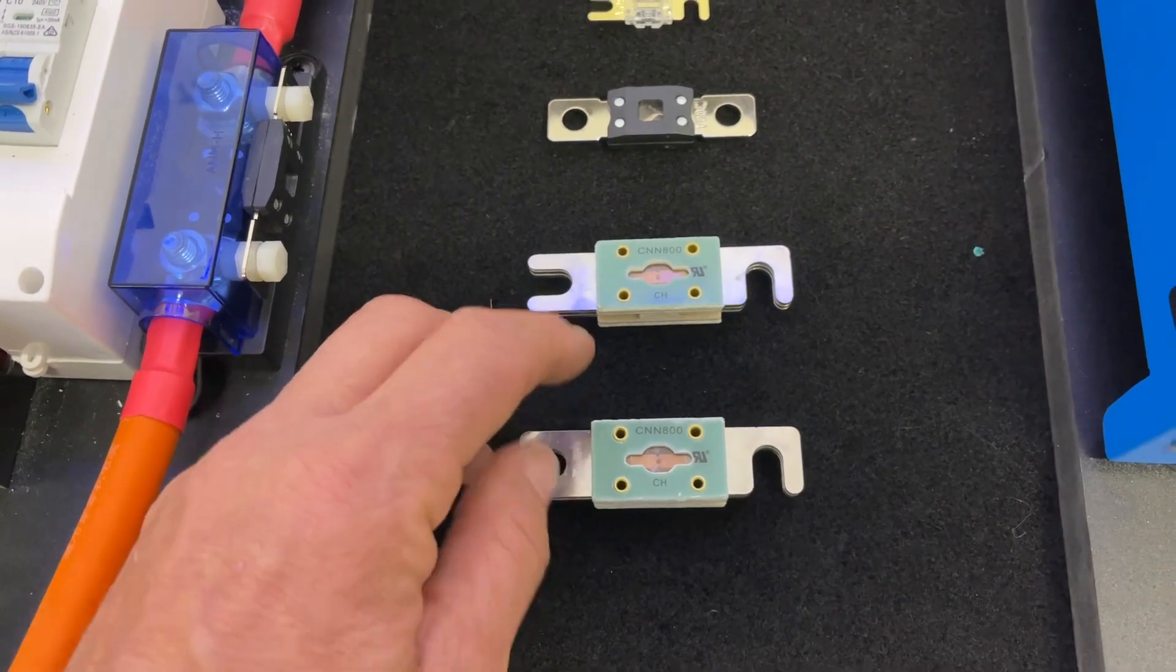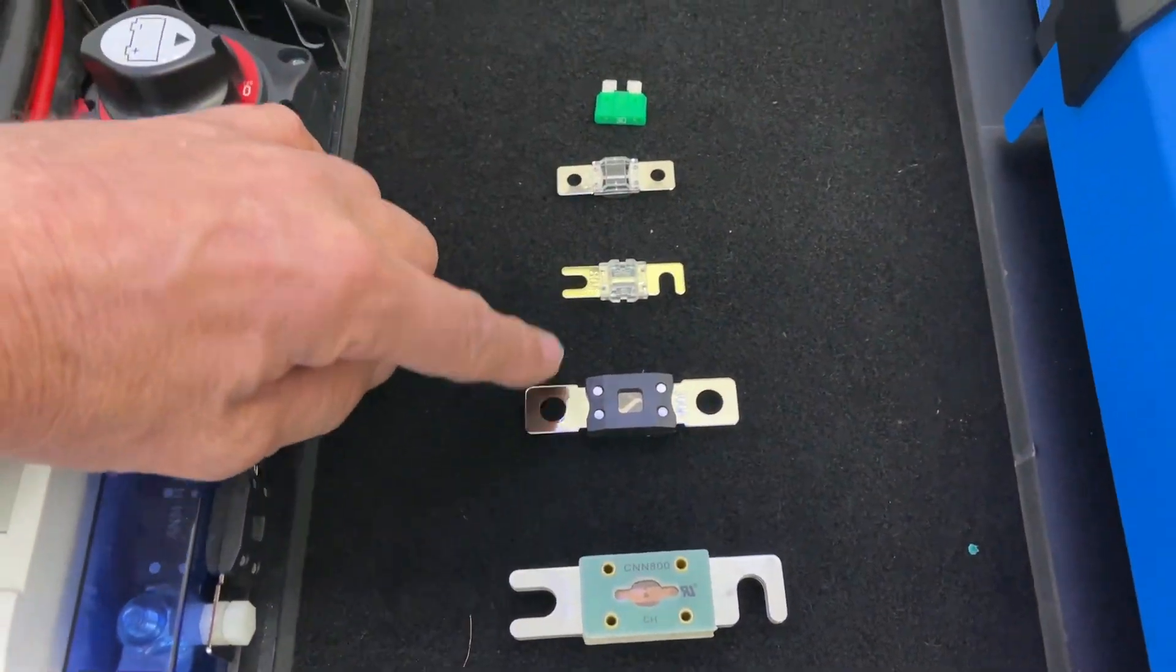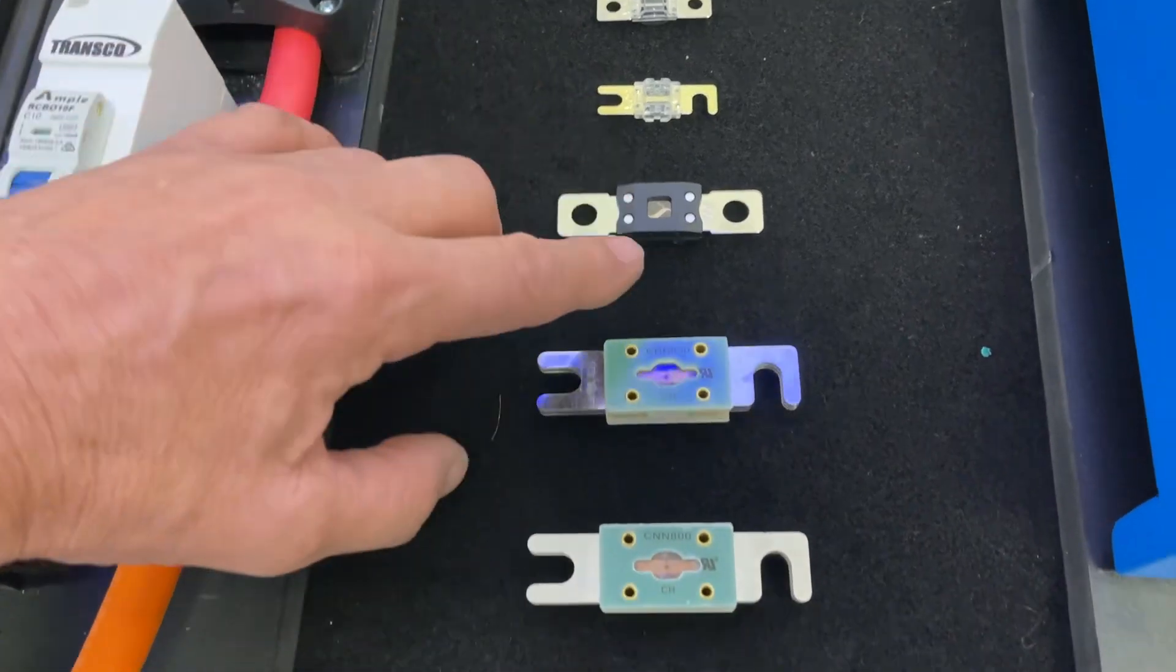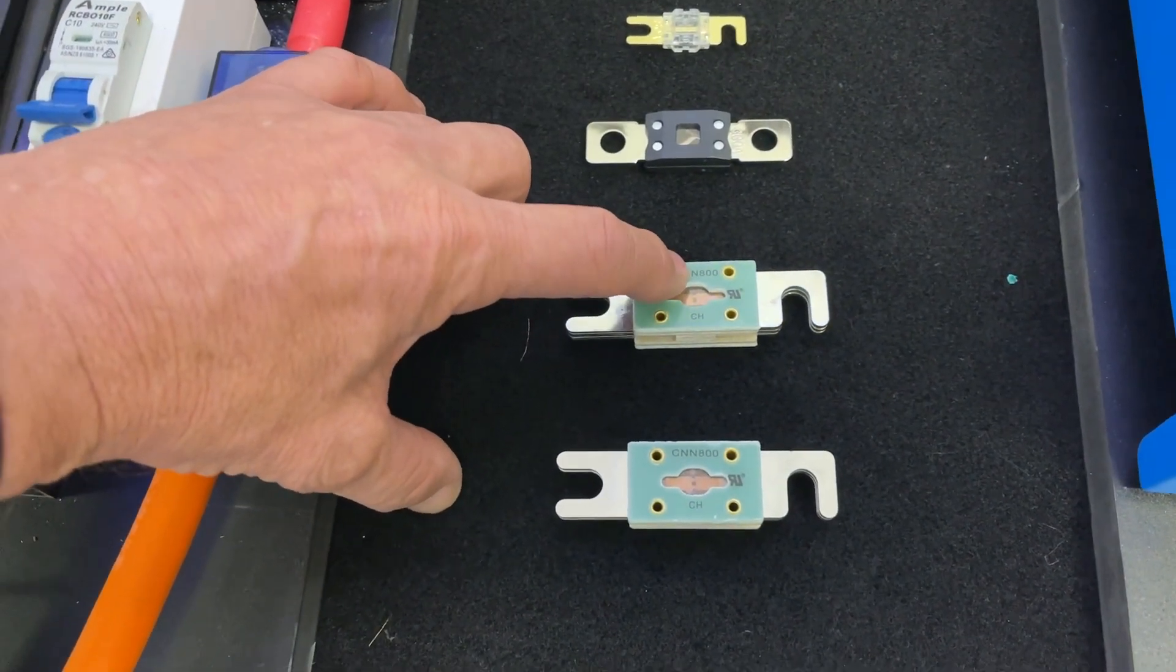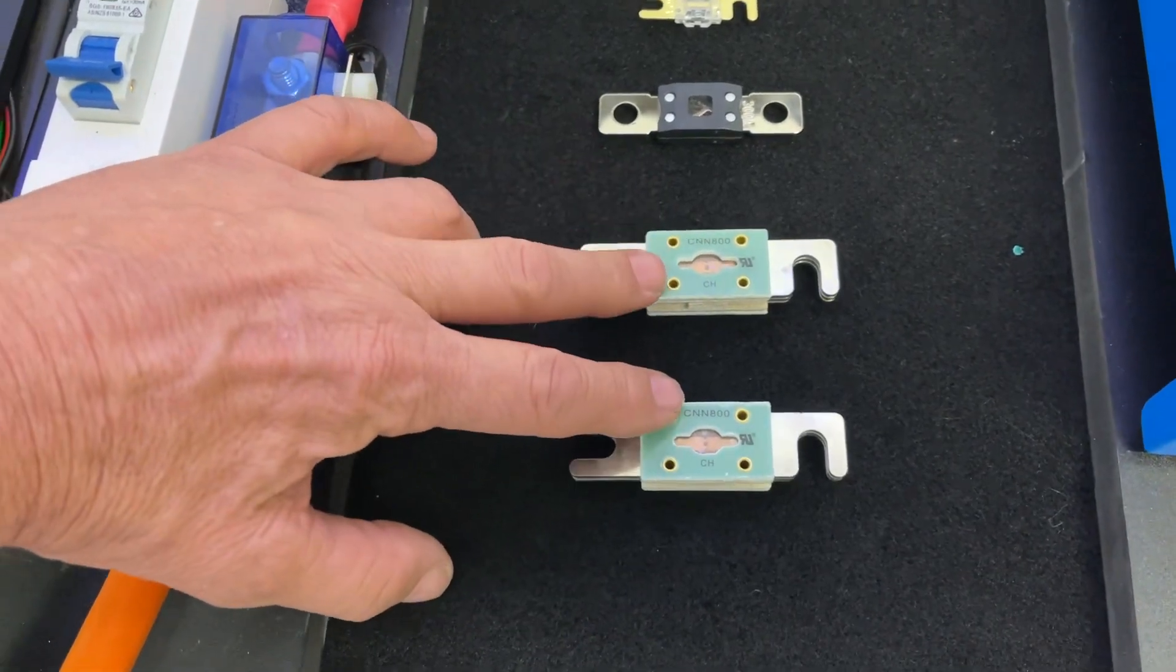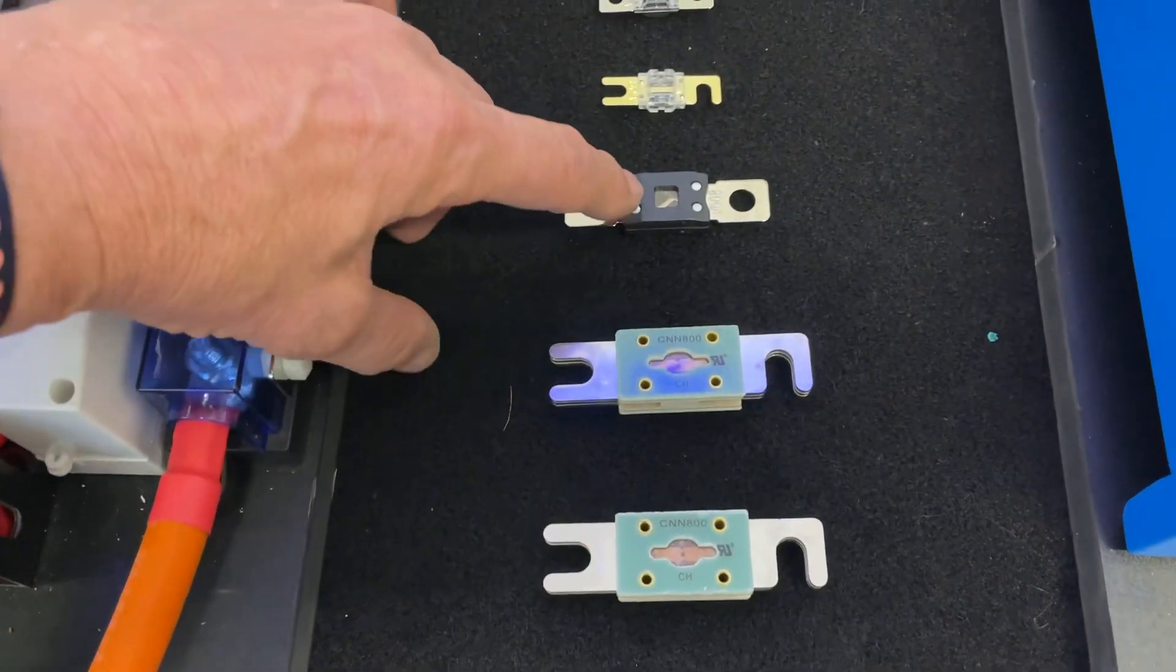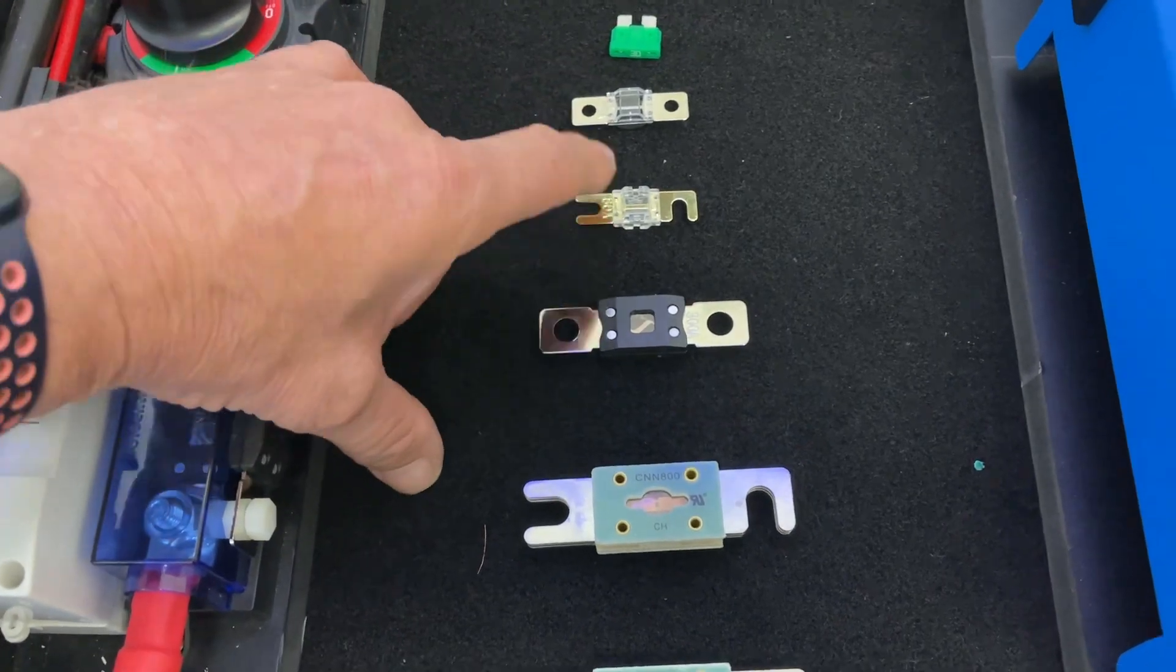The next thing is speed of blowing. These are all slow blow fuses—they're not fast. These here are fast, and there's a very fast blow option if you change the last digit.